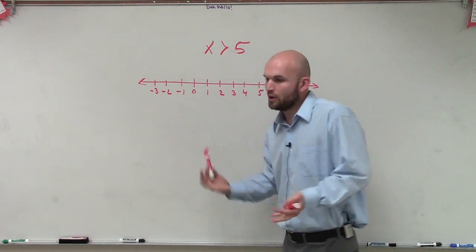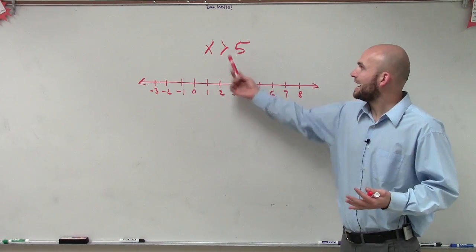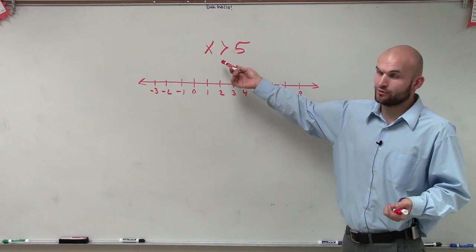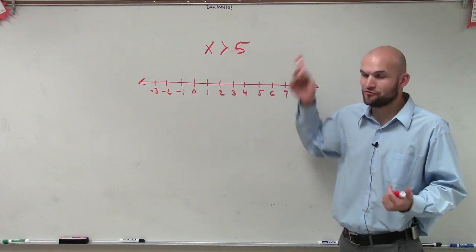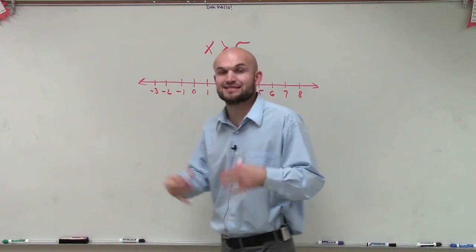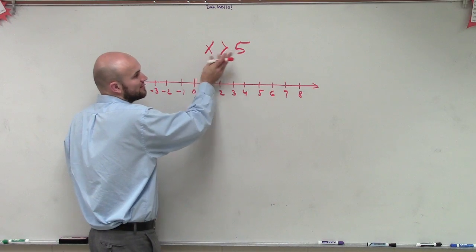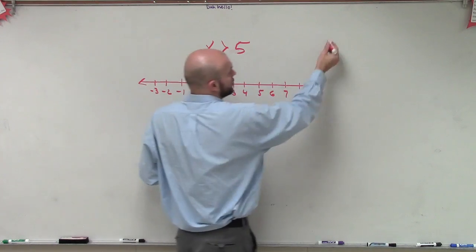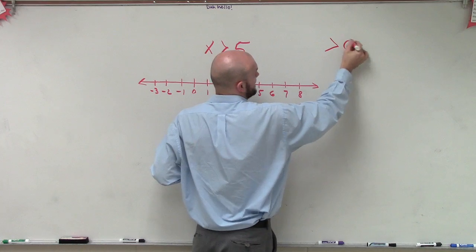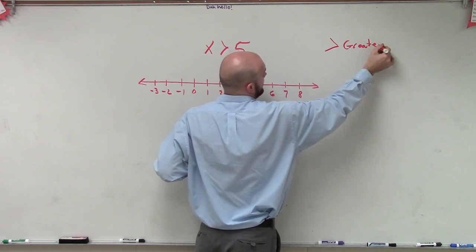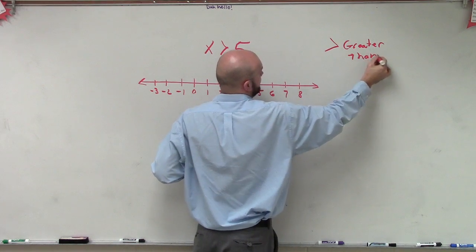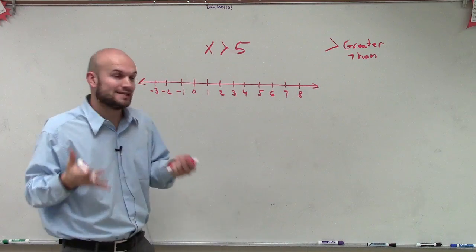So what they're saying is, how can we graph x with this little inequality symbol, which means greater than 5? So remember, x represents any number, right? It can represent any different quantity. So I'm looking at what numbers then are greater than 5. So this is what we call the greater than symbol, and what it just means is all numbers greater than.